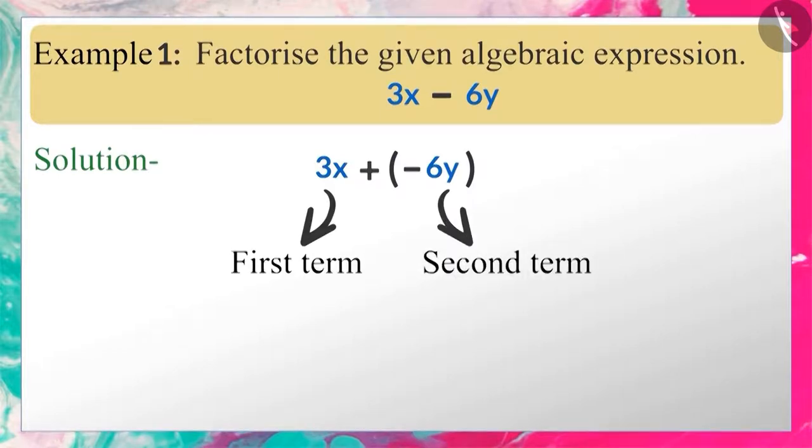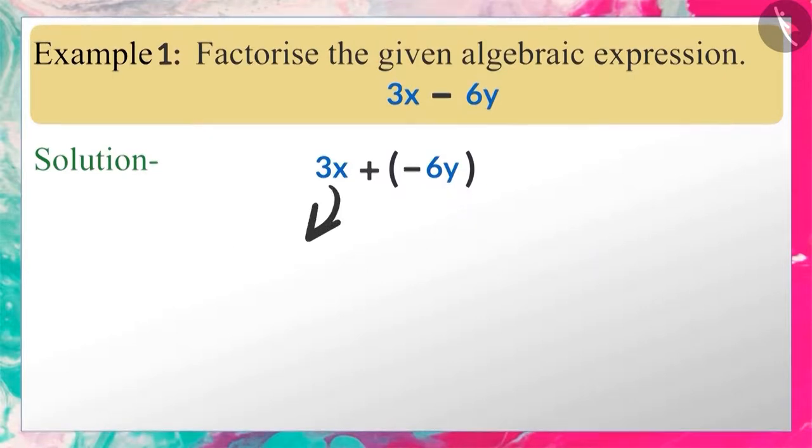This algebraic expression has two terms: 3x and minus 6y. Here we can write 3x as the product of 3 and x.